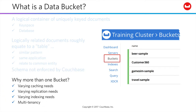Buckets allow you to isolate data based on varying caching, replication, and indexing needs, as well as to support multi-tenancy within your system. If you'd like to learn more right away about how data modeling works in JSON, take our free online course, CB105.